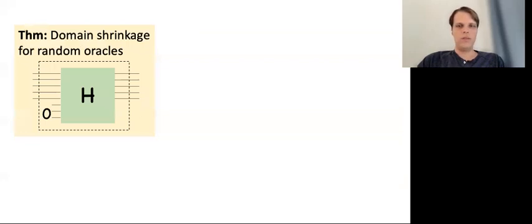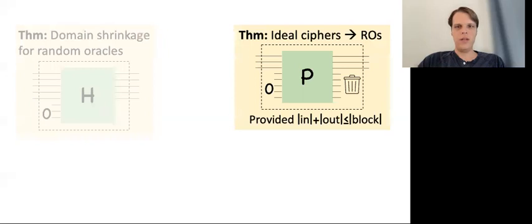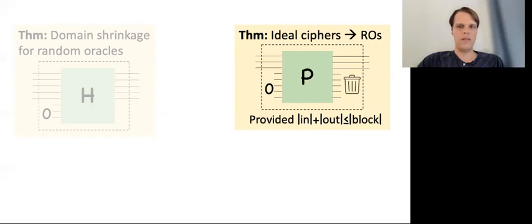Next we move on to our actual meaningful results. First, we prove that domain shrinkage is in fact possible with reset indifferentiability using the obvious padding construction — the difficulty is in actually proving that this works. Then we investigate the natural approach to building a random oracle from a random permutation by padding the input and truncating the output, which can also be seen as the sponge construction for a single message block. We show that as long as the input and output size of the derived hash function satisfy a certain constraint, this actually does give a reset indifferentiable hash function. The constraint is basically that the input size plus the output size of the hash function can't exceed the block size of the ideal cipher.